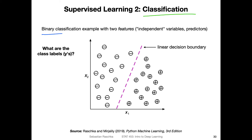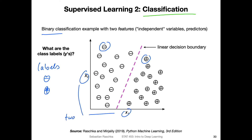Here's an example of a binary classification problem, where we only have two possible labels — a minus sign and a plus sign. I have two features, x1 and x2. The goal is to predict for a new data point whether it's a plus or minus. If a new data point is located on the left side of the decision boundary, this linear decision boundary learned by the machine learning system would predict a minus sign, and everything on the right-hand side would be predicted as a plus sign. So the goal in classification is to learn a decision boundary.